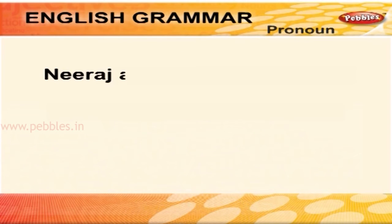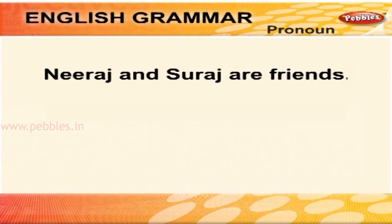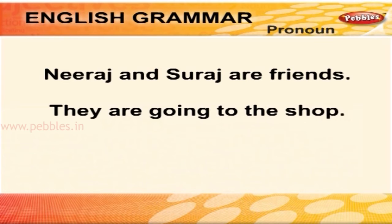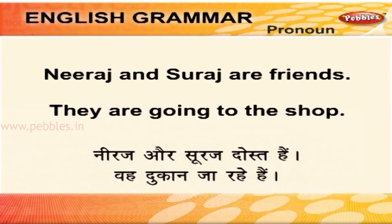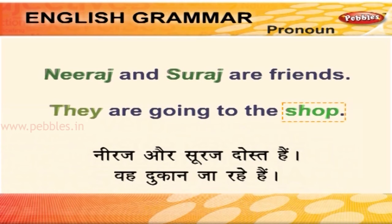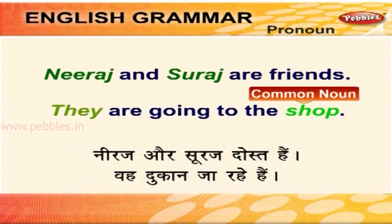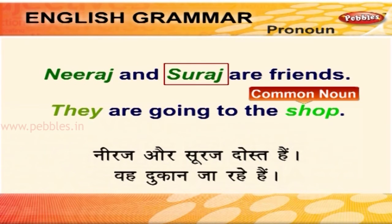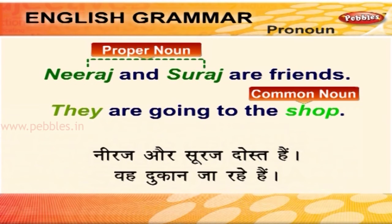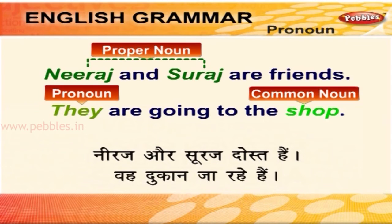Neeraj and Suraj are friends. They are going to the shop. नीरज और सुरज दोस्त हैं, वे दुकान जा रहे हैं। यहाँ shop एक common noun है। नीरज और सुरज दोनों proper nouns हैं, और उनकी जगह They नामक pronoun ने ले ली है।